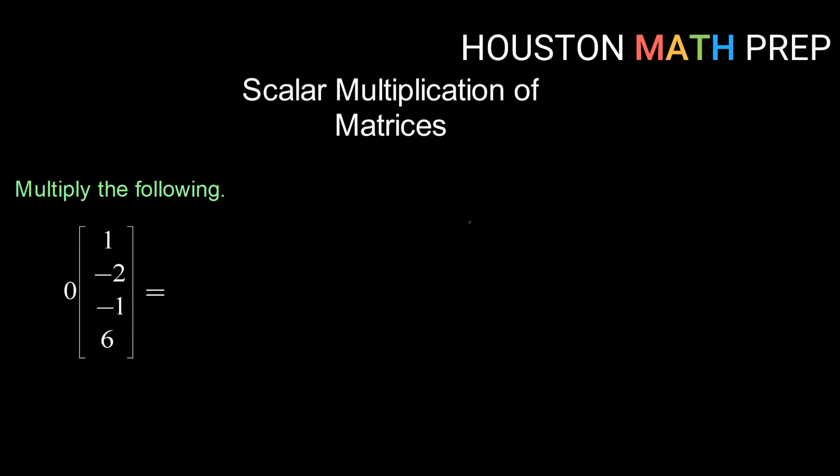And finally, multiply this scalar of 0 times this 4 by 1 column matrix. Our result is going to be another 4 by 1 matrix. We'll always have the same dimensions. And we're just going to distribute this 0 to every entry. 0 times 1 is 0, 0 times negative 2 is 0, 0 times negative 1 is 0, and 0 times 6 is 0. So our result is this 4 by 1 matrix of all 0s.